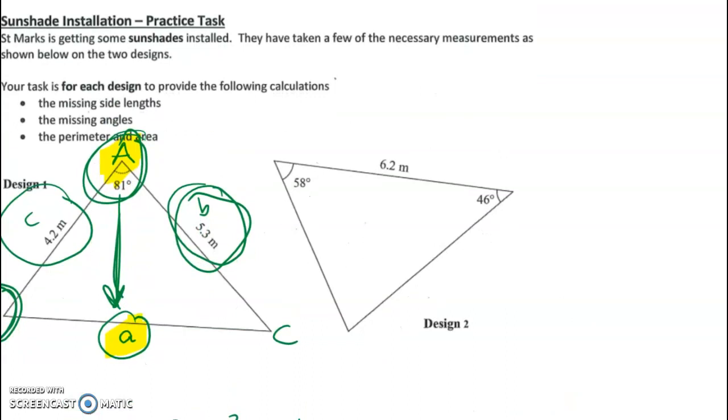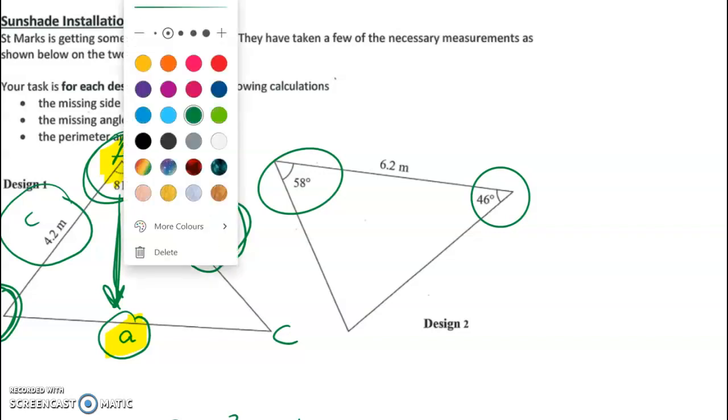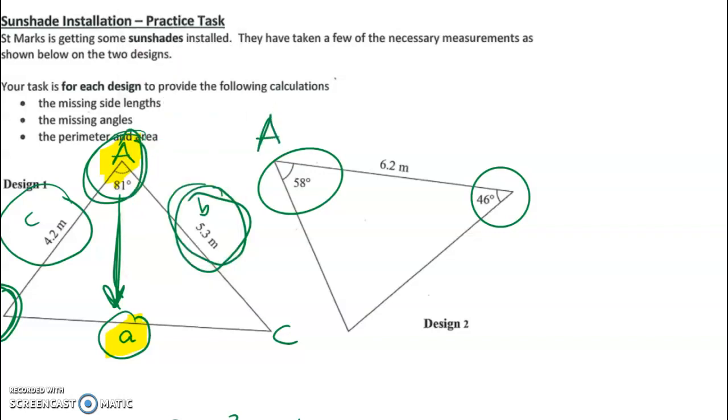Now we need to do the same thing for design two, but as I said at the start, this one actually turns out to be really fast as long as you remember that the angles in the triangle add up to 180 degrees. So again we're going to start off by labeling. Label big A, big B, and big C. So this is side length a, this is side length b, and this is side length c.